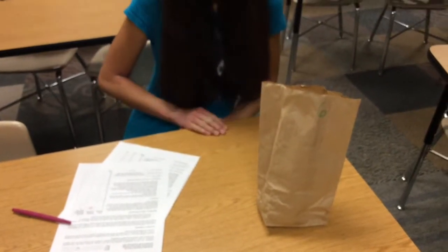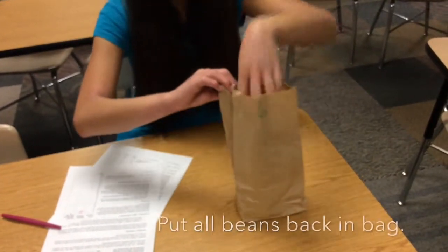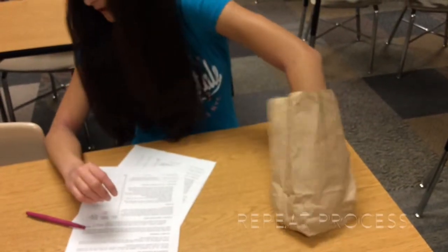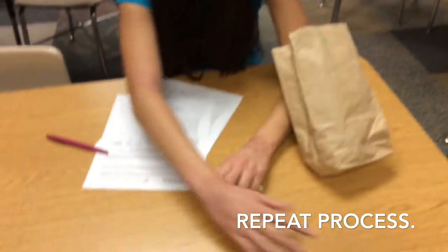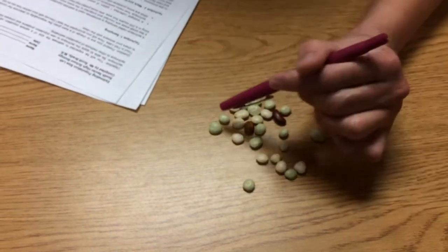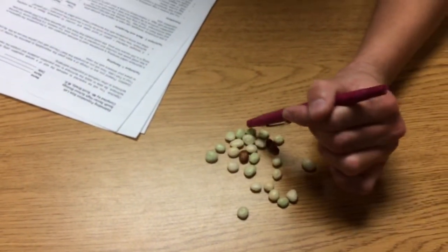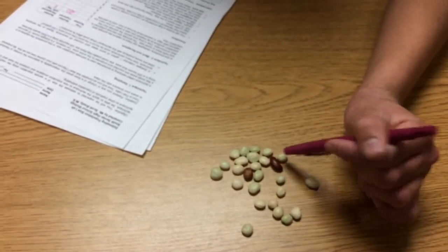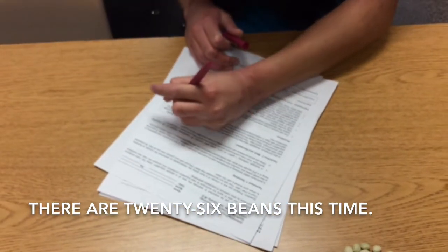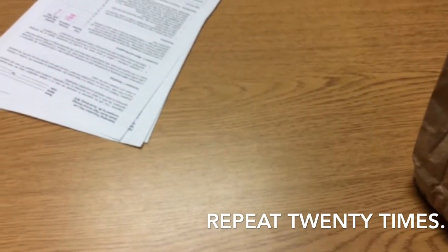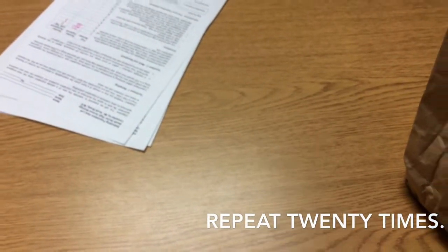After you do that once, you'll grab all these beans that you took out and put them in the bag and then shake up the bag. Then after you shake up the bag, take out another random handful and count how many were in those and record it again. In this one there was 26, and then there's just one recaptured with a tag. Then you'll just keep pulling them out, counting them, and putting them back in until you've done that 20 times.